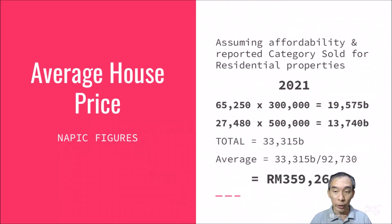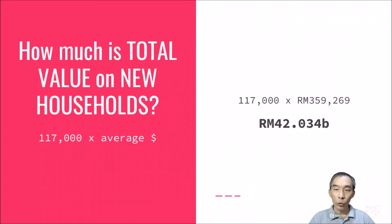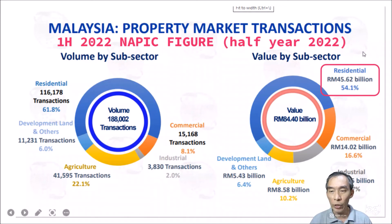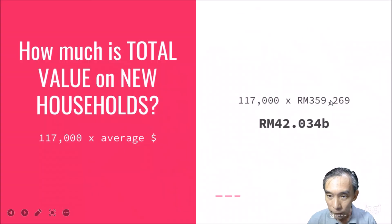Using this assumption, 117,000 households multiplied by RM359,269 per unit arrives at approximately RM42.034 billion in demand. Comparing this to NAPIK data: the first half of 2022 reported residential sales as 54.1% of the total NAPIK value. Our estimate of RM42.034 billion is obviously lower than that, coming in at only about 29% when compared against the reported figures.